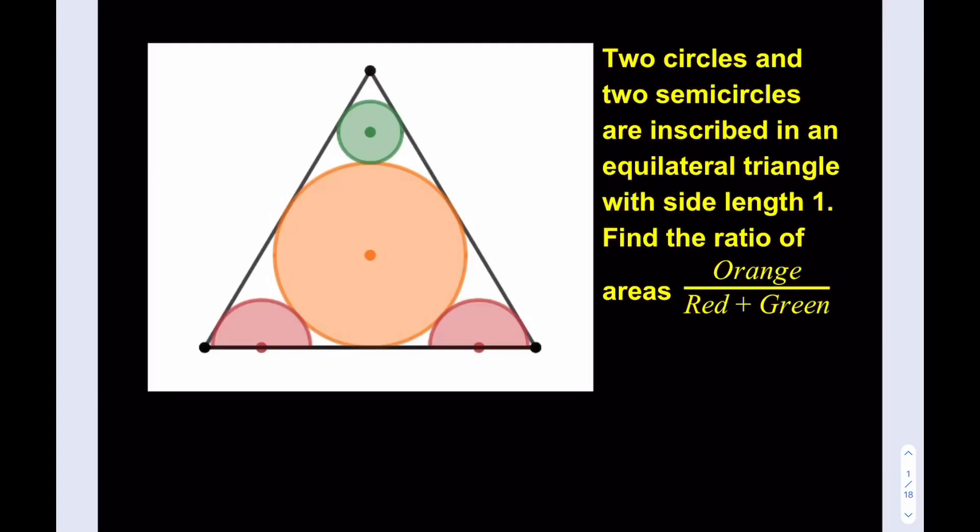Hello everyone, in this video we're going to be solving a geometry puzzle, a very colorful geometry puzzle. Two circles and two semicircles are inscribed in an equilateral triangle with side length 1. Find the ratio of areas orange to red plus green.